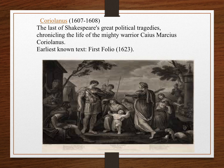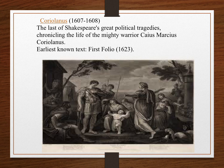Coriolanus, 1607–1608. The last of Shakespeare's great political tragedies, chronicling the life of the mighty warrior Caius Marcius Coriolanus. Earliest known text: First Folio, 1623. Roman general Coriolanus makes his name defeating an enemy army and defending Rome. The Senate nominates him as consul, but he cannot win the people's vote, so he is banished from Rome and allies with his old enemy. He comes to attack Rome, but his mother persuades him not to, and his newfound ally kills him for the betrayal.